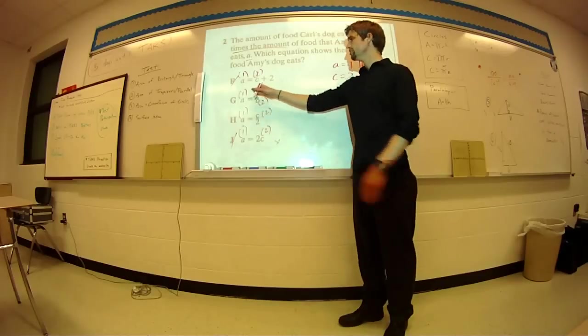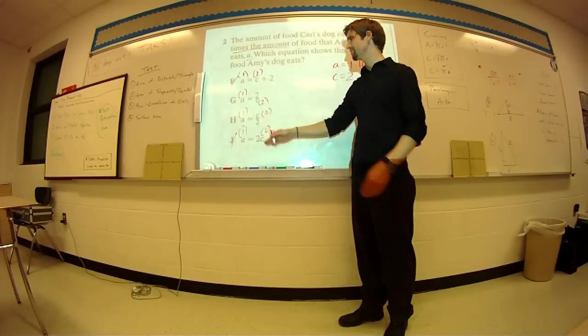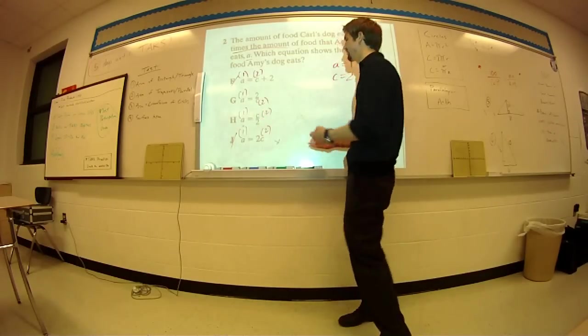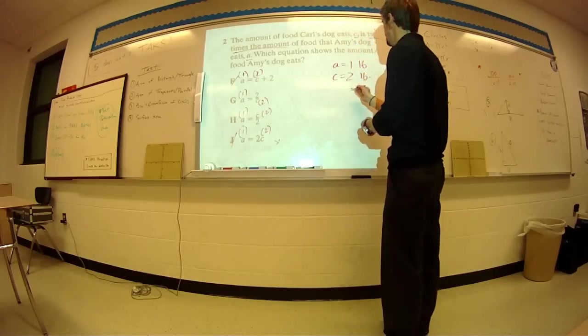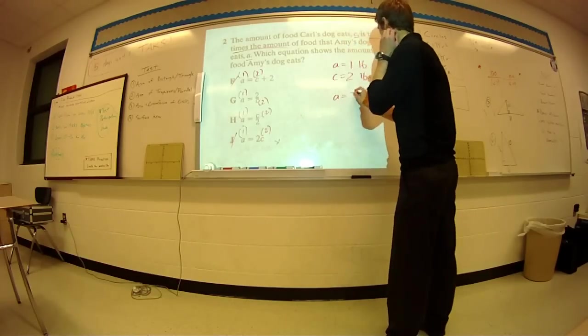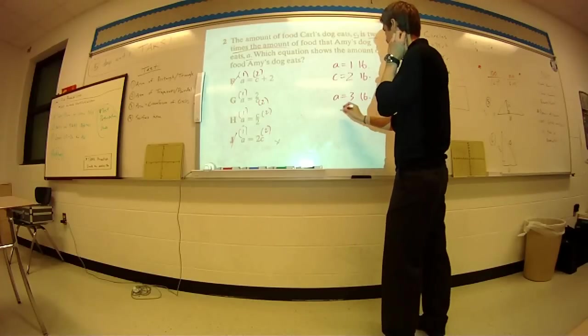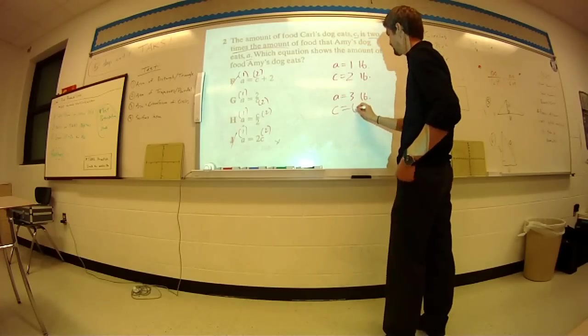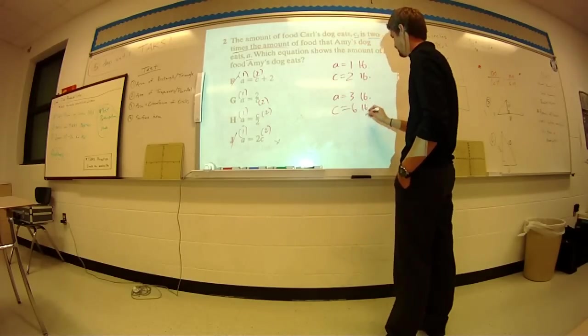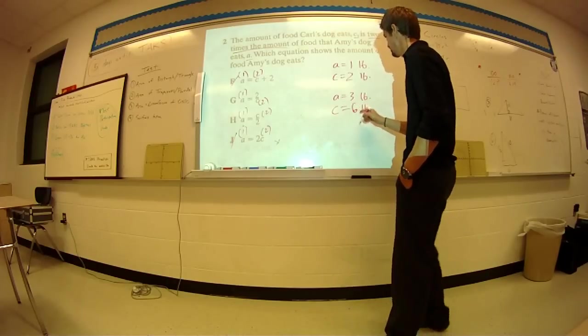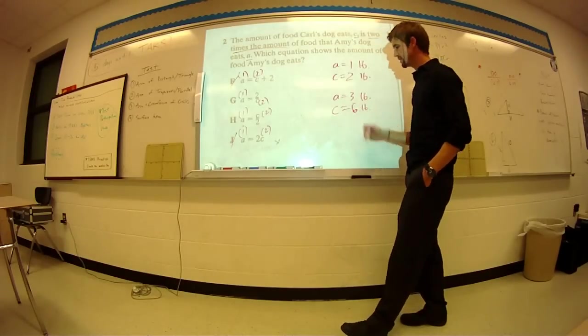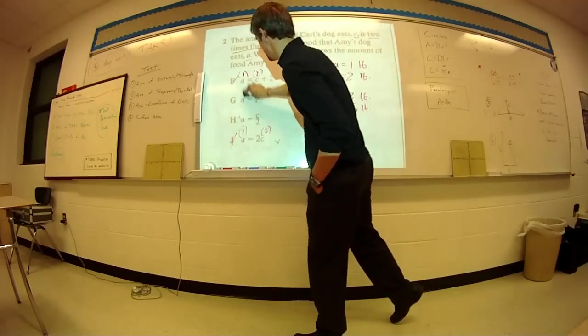So now let's figure out, so one and two give us two options. What if we change that up a little bit? What if we put something like A equals, she eats three pounds, and therefore Carl's dog would eat six pounds. So let's plug it in there, these two choices that we have left.